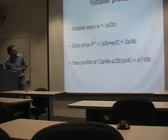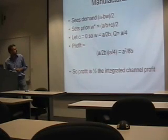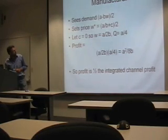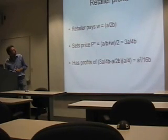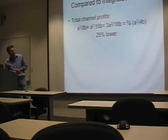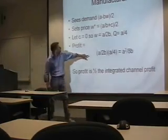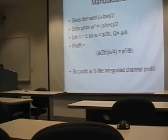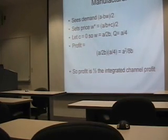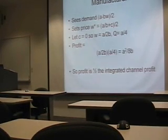Now we can compare the results from the channel case with the results from earlier. For convenience, we'll assume cost C equals zero — it won't change any of our results but simplifies the calculations. Here are the manufacturer's profits, and here are the retailer's profits. Comparing total channel profits: the manufacturer is making A²/8B, whereas before, with C = 0, profits were A²/4B. Setting C = 0 gives us a price of A/2B and a quantity of A/2.